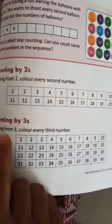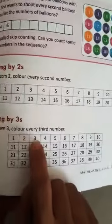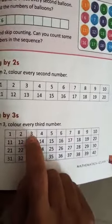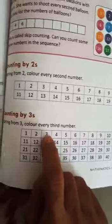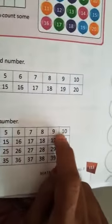skip counting by 3's. Here, you will start from 3. Every third number you will color. 3, 5, then 7, then 9. You will do coloring by 3.